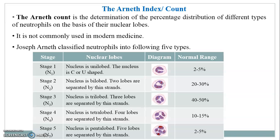Stage 4 (N4) has a tetralobed nucleus with four lobes separated by thin strands and a normal range of around 10–15%. Stage 5 (N5) has a pentalobed nucleus with five lobes separated by thin strands, with a normal range of 2–5%.